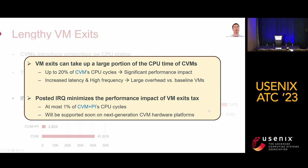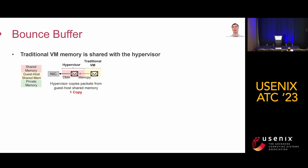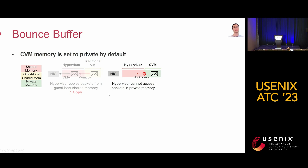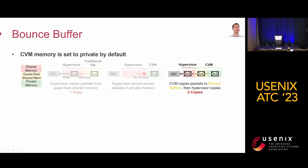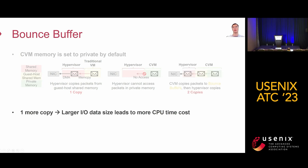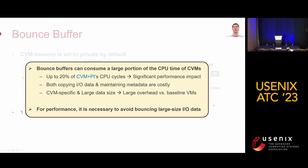Fortunately, posted interrupts can minimize the performance impact of VM exit tax, which will be supported soon on next-generation CVM hardware. For the bounce buffer tax: traditional VM memory is shared with the hypervisor, so the hypervisor copies packets directly from guest shared memory, involving only one copy. However, CVM memory is set to private by default. The hypervisor cannot access packets in private memory. As a result, the CVM copies packets to a pre-established IO staging memory called bounce buffer, then the hypervisor copies packets from the bounce buffer, involving two copies. The additional copy means that larger IO data size leads to more CPU time costs. The takeaway: bounce buffers can consume a large portion of CPU time, and it is necessary to avoid bouncing large-sized IO data.